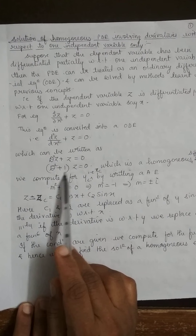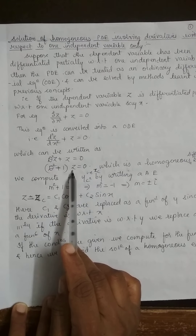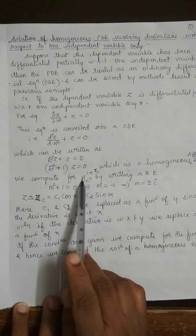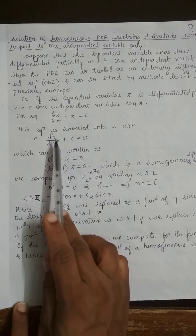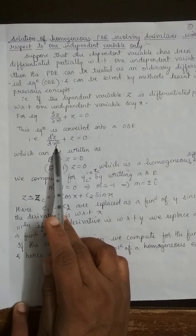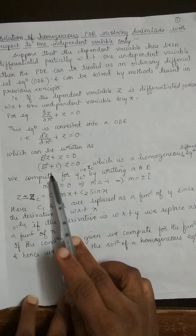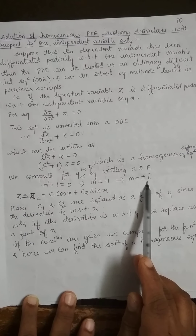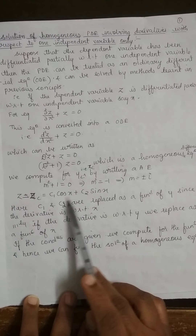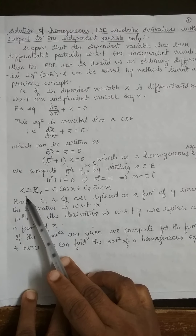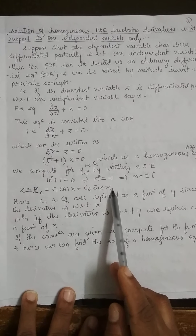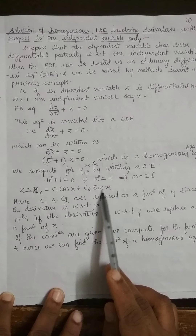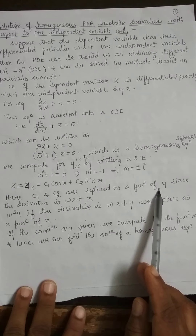Taking z common, this becomes a homogeneous equation. The solution is obtained by writing the auxiliary equation and finding zc. In this problem it is zc in place of yc, since z is used instead of y, and the variable is x. Writing the auxiliary equation: m² + 1 = 0, giving m = ±i, which are imaginary roots. So z = c₁cos(x) + c₂sin(x).